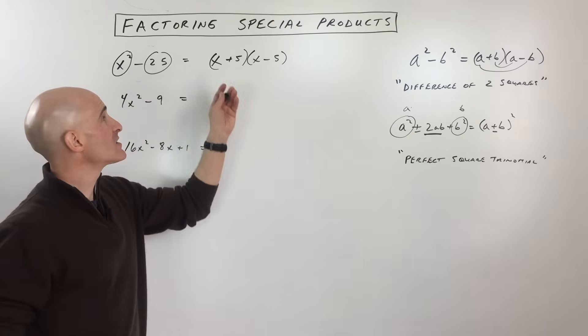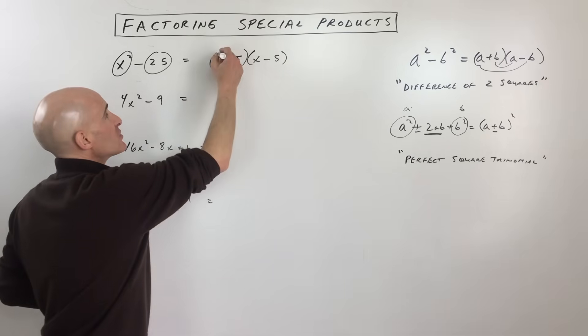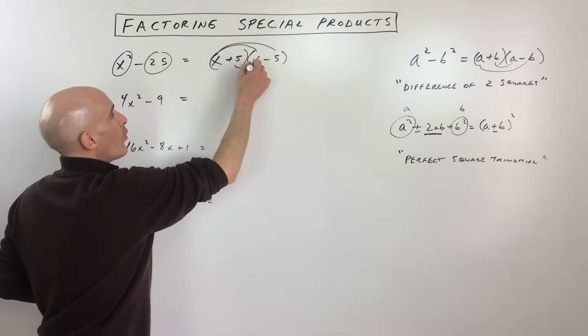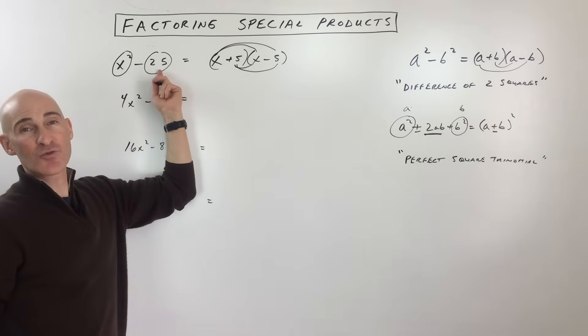The nice thing about factoring is you can always multiply it back out, either by using the distributive property twice or the FOIL method, and you'll see that you get back the original.